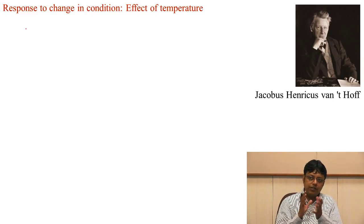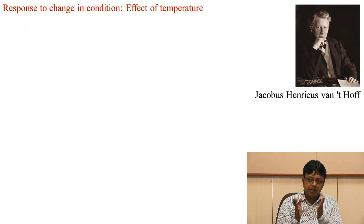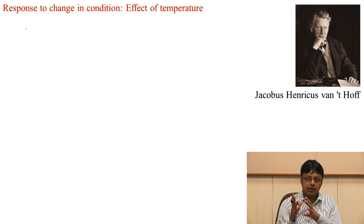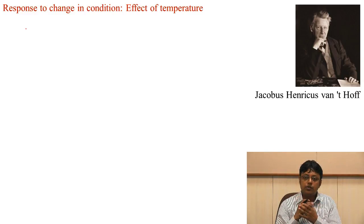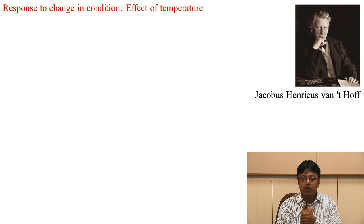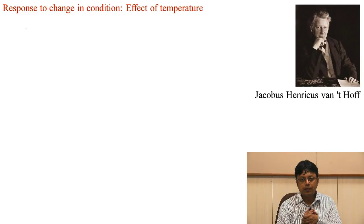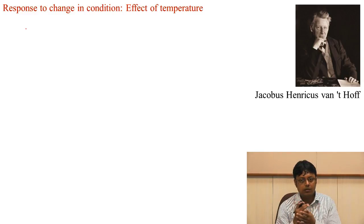There are different ways of thinking about how the equilibrium constant changes with respect to temperature, but we would like to connect it to the heat or the enthalpy of the reaction. Here we are talking about ΔG, not ΔH, but the connection was made by Van't Hoff, who did a lot of work on thermodynamics and chemical kinetics. He was the first to receive the Nobel Prize in chemistry, and together with Ostwald started the first journal on physical chemistry around 1887.